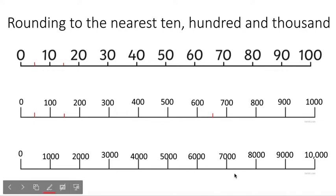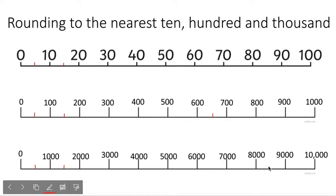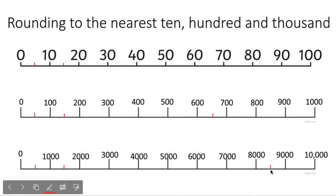And then finally, we've got our thousands. Halfway between 0 and 1,000 is 500. Anything above 500 you would round up to 1,000; anything below 500 you would round down to 0. Halfway between 1,000 and 2,000 is 1,500. Anything 1,500 and above, you'd round up to 2,000; anything below 1,500, you'd round down to 1,000. Anything between 8,000 and 9,000 — if it's above 8,500, you'd round it up to 9,000; anything below 8,500, you would round down to 8,000.